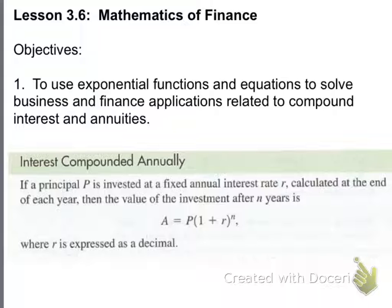If a principal P, P is the amount that you're investing, at a fixed annual rate or annual interest rate R, calculated at the end of each year, then the value of the investment after N years is A equals capital P times the quantity 1 plus R to the N power, where R is expressed as a decimal. So it's only being compounded once. That's what annually means. Every year, your money is only being compounded one time.